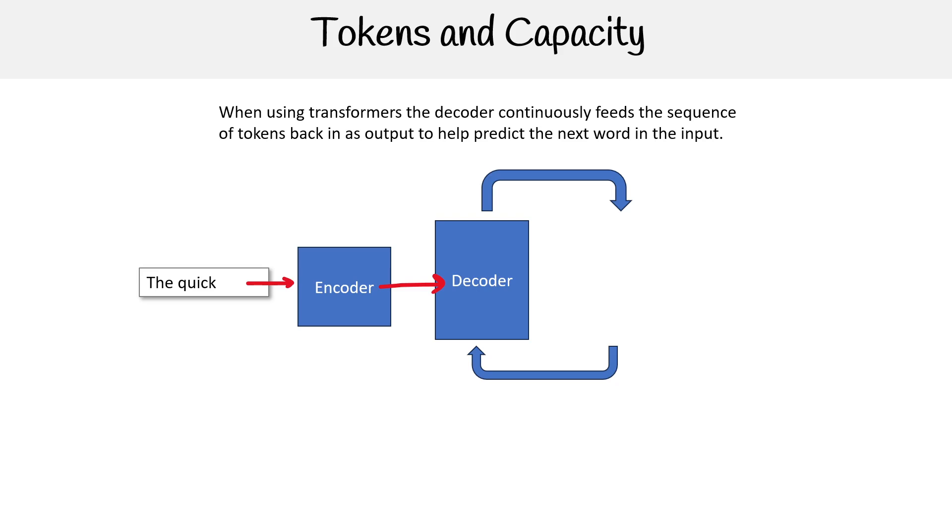Then the decoder outputs the next words: 'the quick brown.' What it does is it feeds that sequence of tokens back into the decoder and produces the next word, again and again.